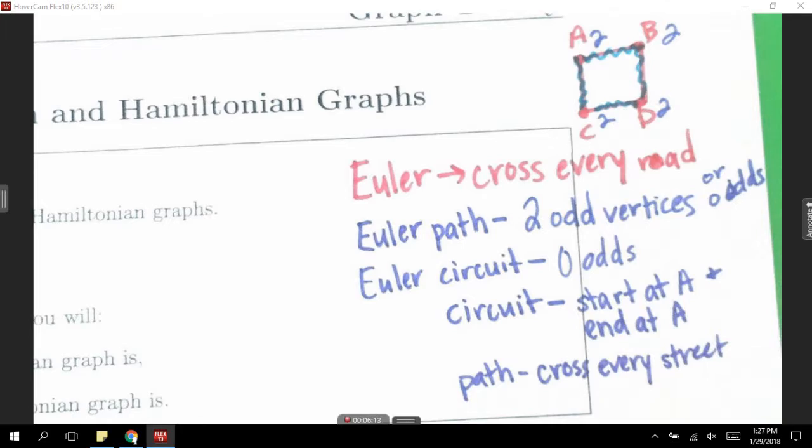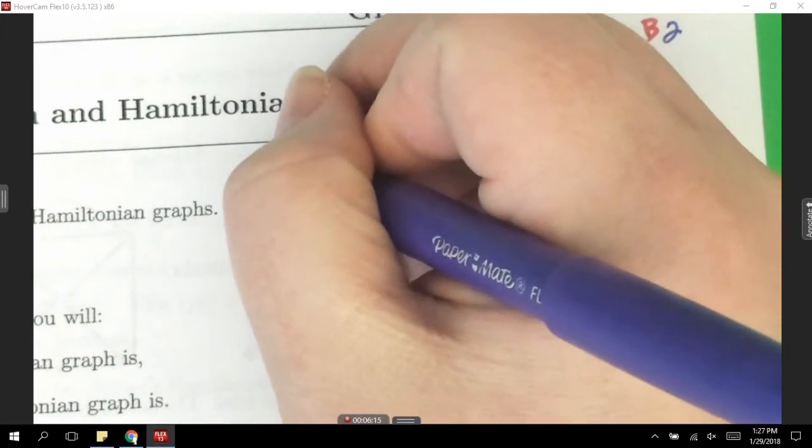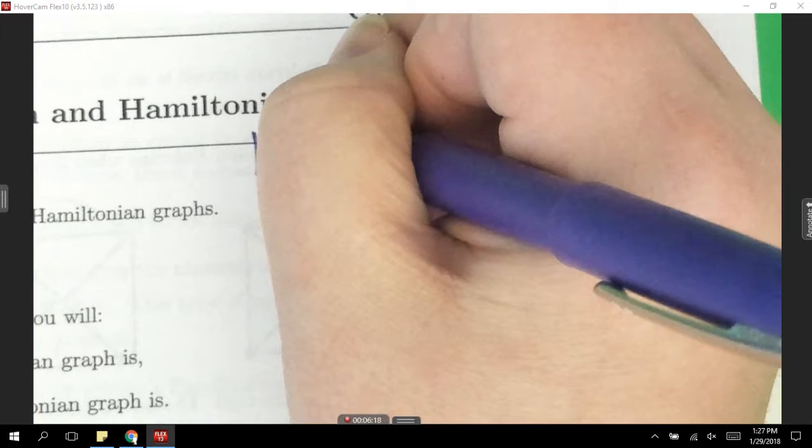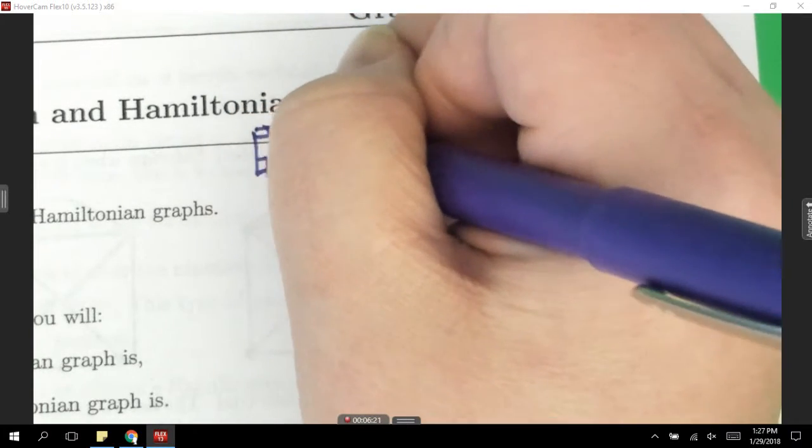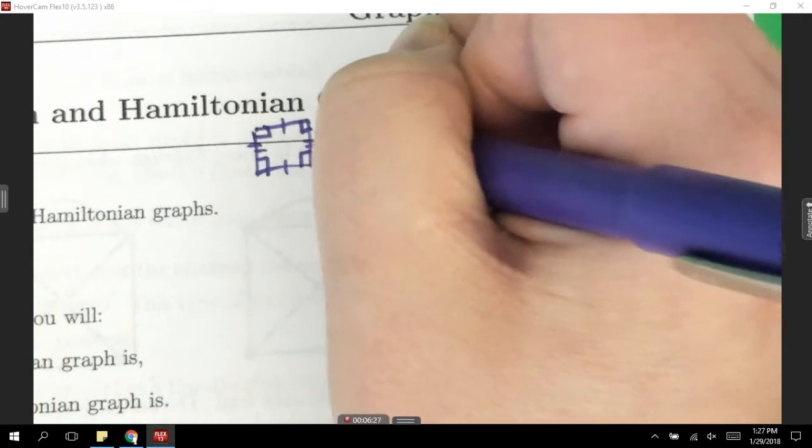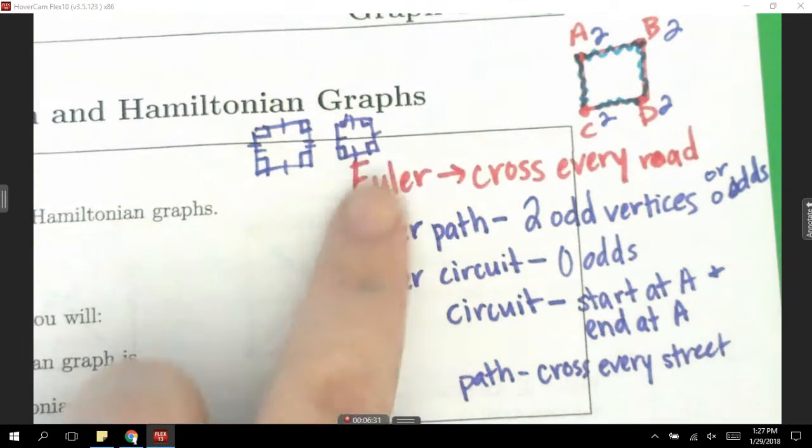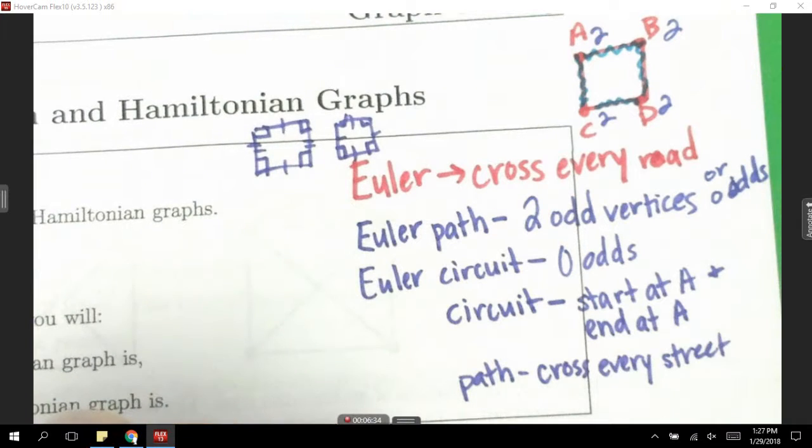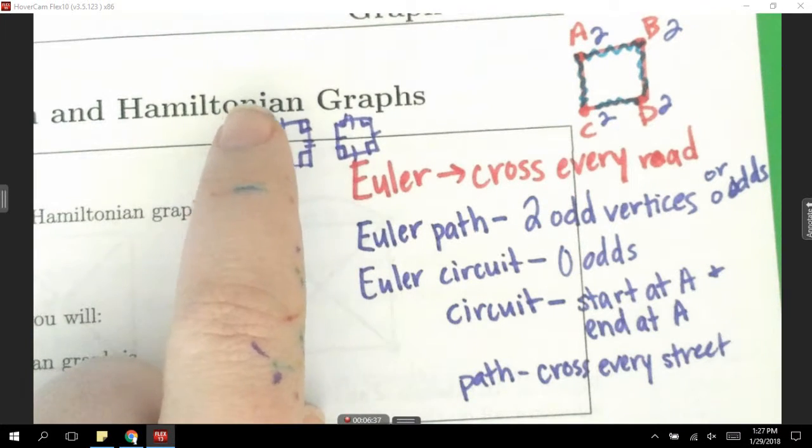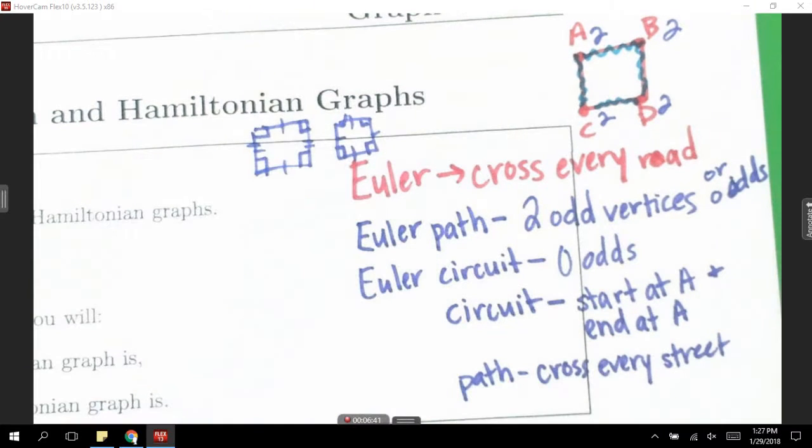Technically when you and I started A and ended A, we did cross every street. So technically a circuit is a path. It kind of reminds me of that great debate you used to have in my class with rectangles and squares. This was a rectangle. This was a square. And a square is a rectangle, but a rectangle is not a square. In the same way, circuits and paths are very similar. Circuits and squares are super elite, super exclusive. But technically, if you're a square, you're a rectangle. And technically, if you're a circuit, you're a path.